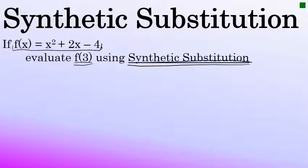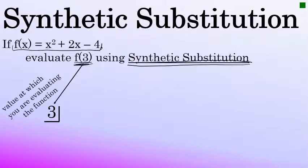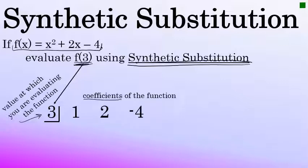This process begins by taking the value at which you're evaluating the function. In this case, we're trying to find f of 3, so that value is 3, and the notation we're going to use is half of a box. We put that 3 in half of a box — this 3 is the value at which we're evaluating the function. If we were evaluating f of negative 2, we would put a negative 2 in the box. Beside the box, we're going to make a list of the coefficients of the original function, written in decreasing degree. The coefficient on the highest power of x comes first, and then we go down to the constant, which is written last in the list.